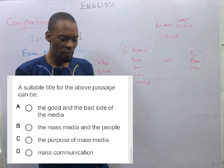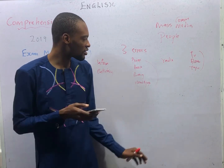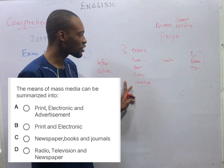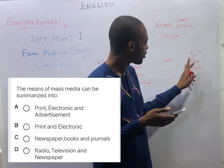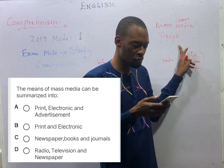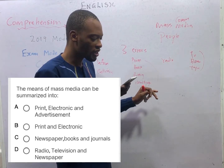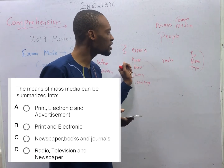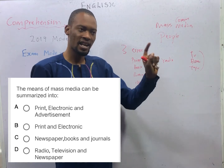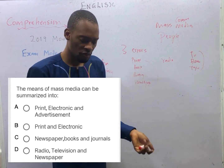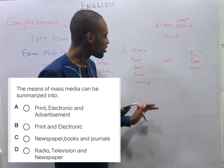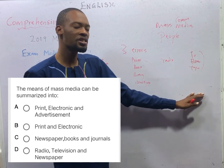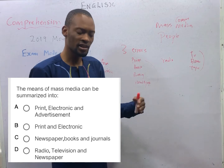The means of mass media can be summarized into: books, magazines, newspapers — all regarded as print — and radio, TV, films and tape, which are electronic means. Option A says print, electronic and advertisement. No — advert can be in print, radio and film, so we can't take advert as a particular branch of mass media. Option B says print and electronic. Books, magazines and newspapers are printed copies; radio, TV, film and tape are electronic copies. That makes sense.